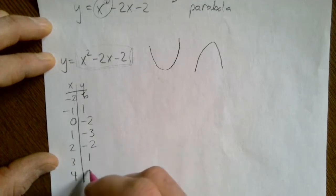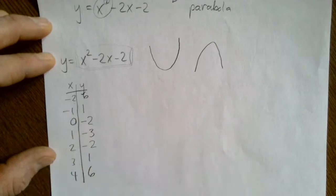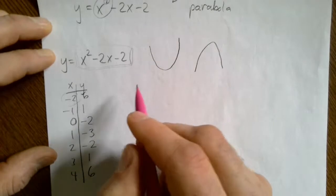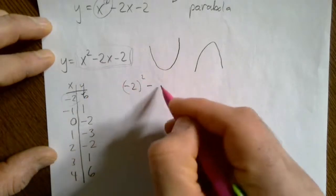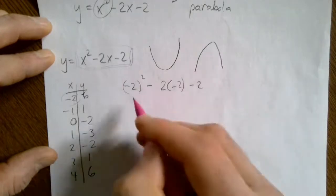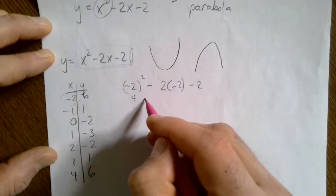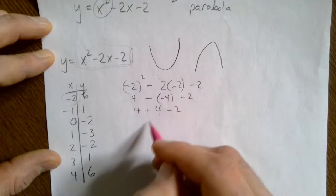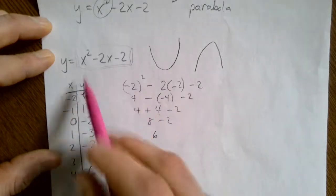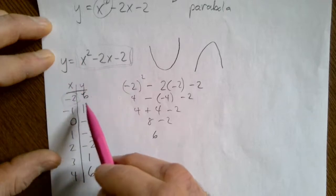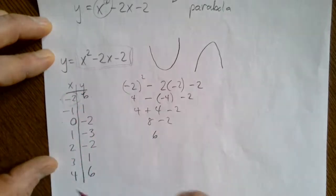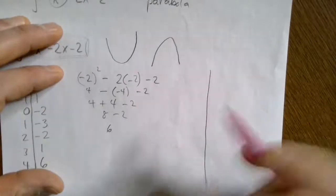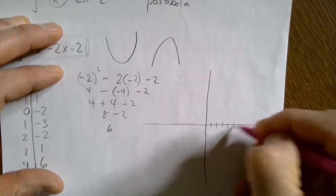Continuing: x = 2 gives y = -2, x = 3 gives y = 1, x = 4 gives y = 6. Let me show the calculation for x = -2: (-2)² - 2(-2) - 2 = 4 - (-4) - 2 = 4 + 4 - 2 = 6. That's how we plug in x to find y. Now we have 7 different points to plot. Get some graph paper or just draw it out.